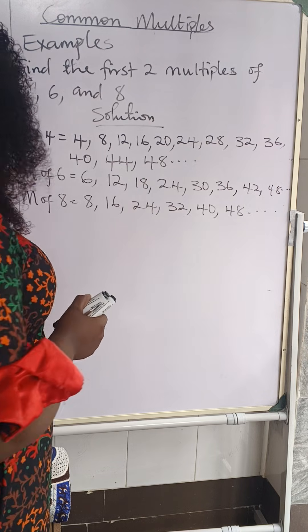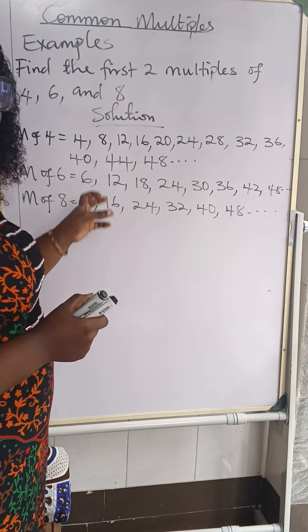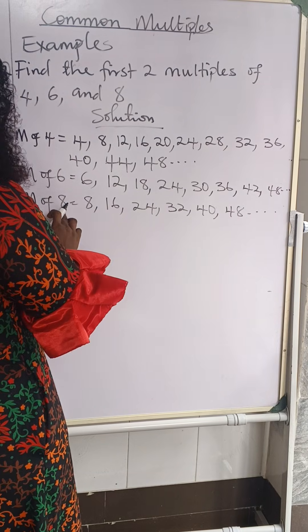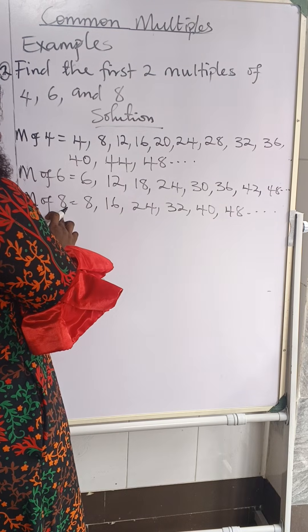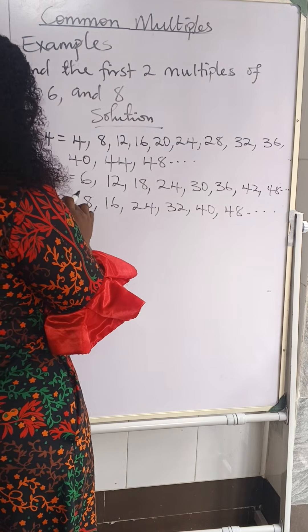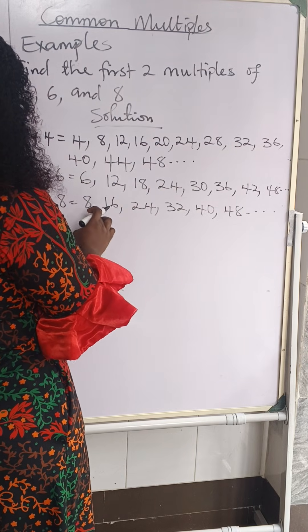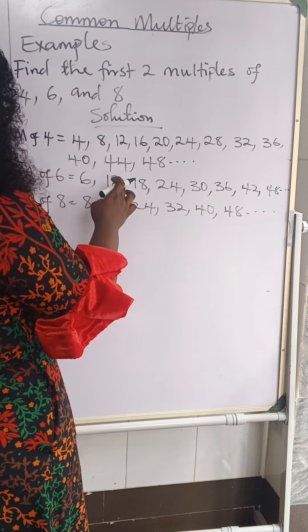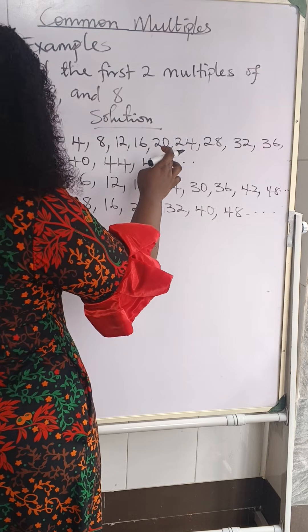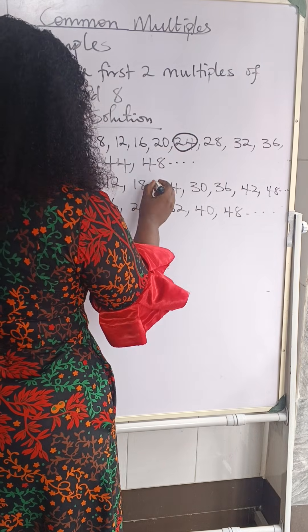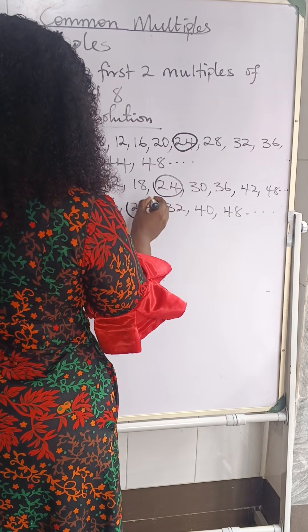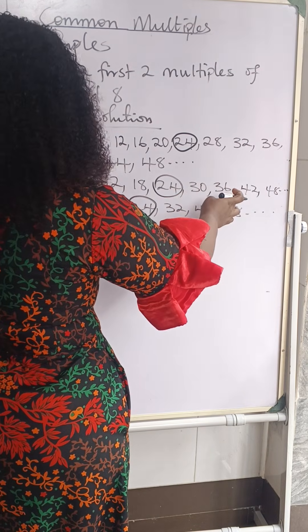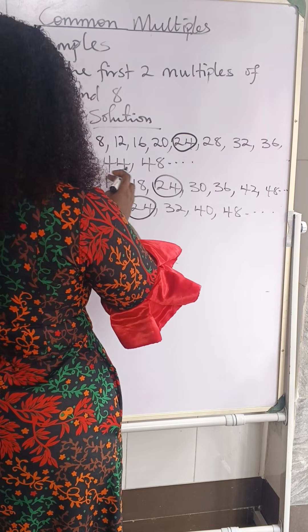Now let's look at the common multiples between four, six, and eight — numbers that are common to all three. We check from eight upward. Sixteen is in fours and eights but not in sixes. Twenty-four is here in fours, and twenty-four is also in sixes, and twenty-four is in eights — that's the first common multiple. Then thirty-six is in fours and sixes but not in eights.